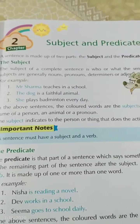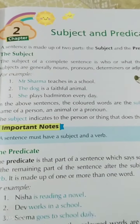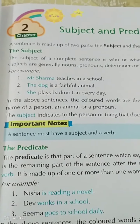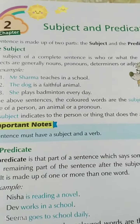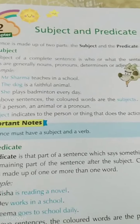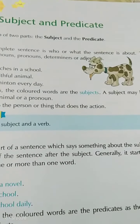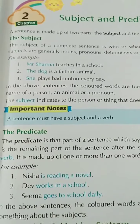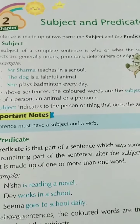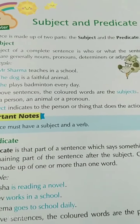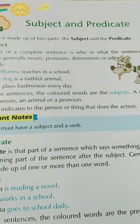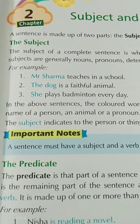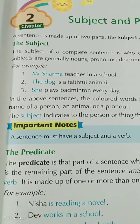The subject of a complete sentence is who or what the sentence is about. Subjects are generally nouns, pronouns, determiners, or adjectives. Now see some examples are given.